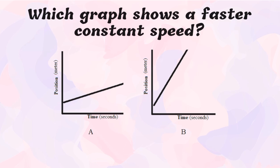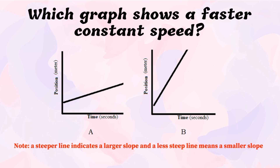For example, given two position-time graphs — graph A and graph B — which shows a faster constant speed? Graph B has a larger slope than A, meaning graph B shows a faster constant speed. A steeper line indicates a larger slope, and a less steep line means a smaller slope. The greater the slope, the steeper the line.